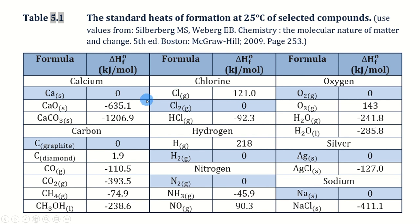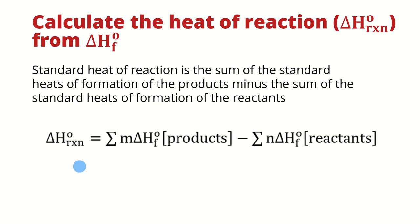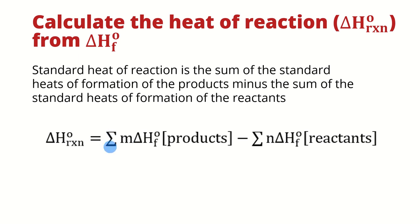A full list of standard heats of formation for various substances has been provided. We use the standard heat of formation to find the heat of reaction by this relationship: the heat of reaction equals the summation of heats of formation of the products minus the summation of heats of formation of the reactants. You must multiply each heat of formation by its stoichiometric coefficient first. The sigma symbol denotes summation — if you have more than one product or reactant, add all their values and then subtract reactants from products.